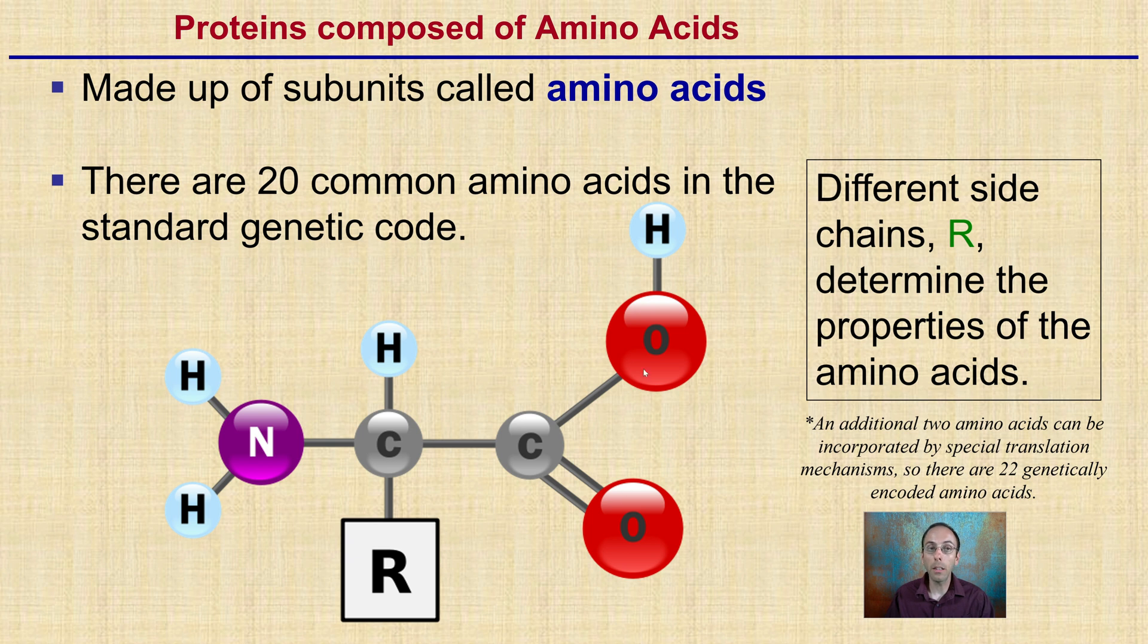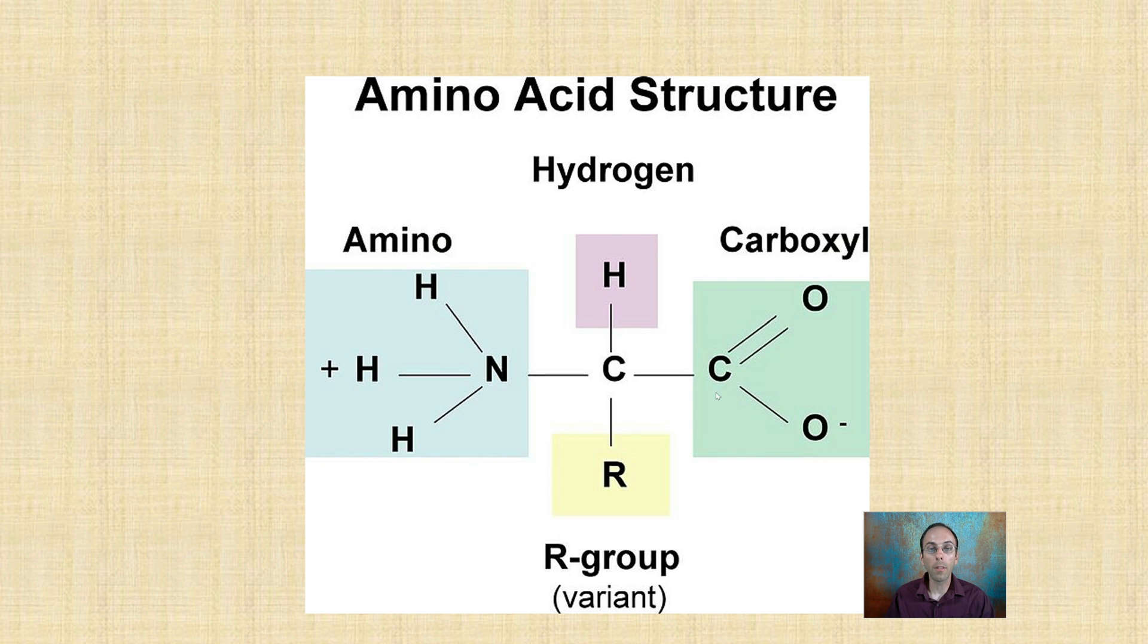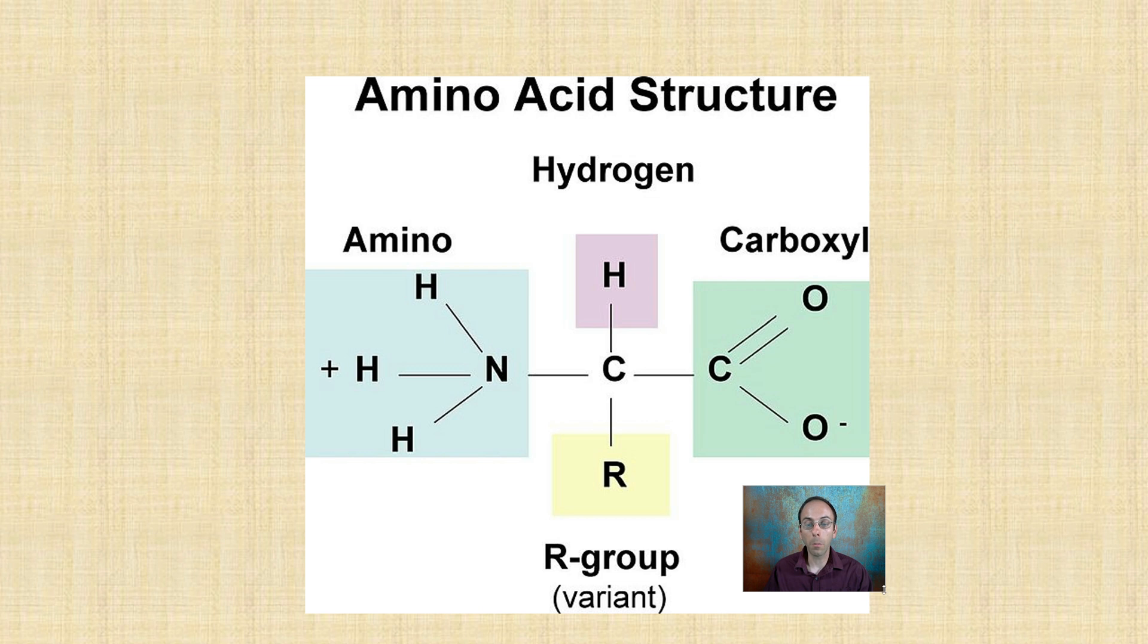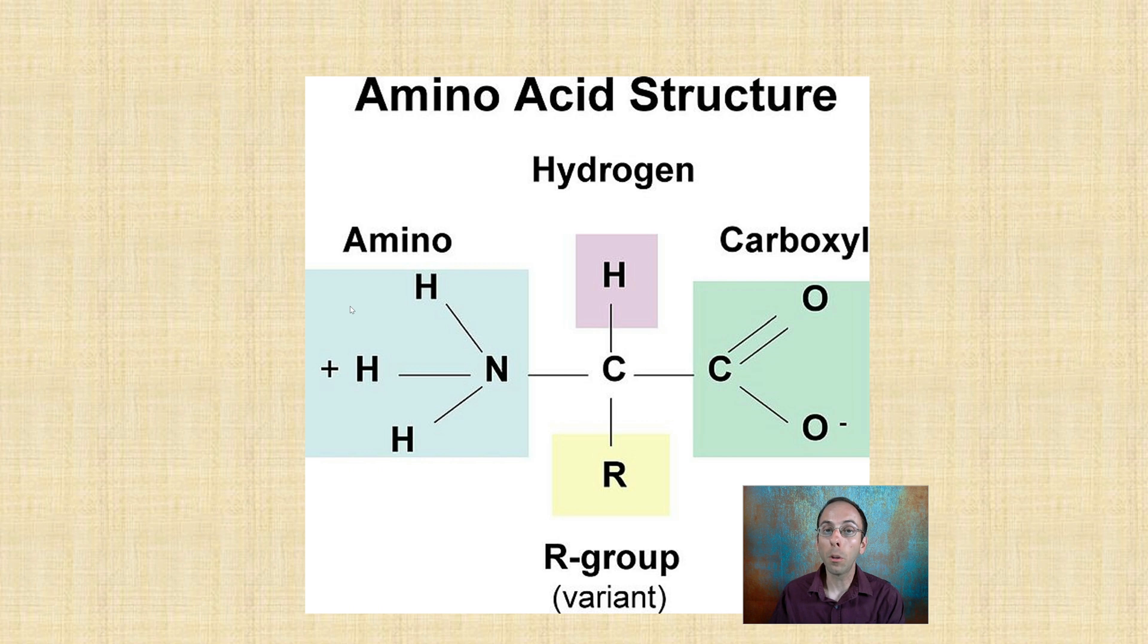Looking a little bit in more detail to this basic components of an amino acid, we have this basic structure here. So there is that R group, which is the variant group. And that's again what makes each amino acid unique. Then there's the amino group, the hydrogen group, and the carboxyl group. So the amino acid gets its name from the amino group. The amino, hydrogen, and carboxyl group. These are common and standard across all amino acids. What makes them different is this R group that provides them with a different structure and also a different function.